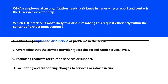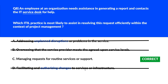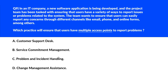Option C says 'managing requests for routine services or support.' The user's request to generate a report is a standard service request rather than an incident or change — we'll park this. Option D — 'facilitating and authorizing changes to services or infrastructure' — deals with change enablement, but generating a report does not require a change to infrastructure. We'll eliminate this and lock option C as the right answer.